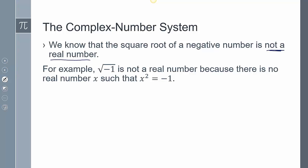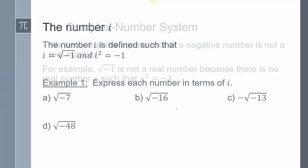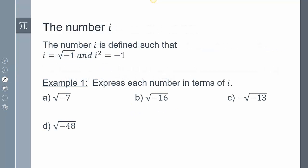An example of that would be the square root of negative 1. It's not a real number because there's no real number x that satisfies x squared equals negative 1. In fact, you can't square any number and get a negative value. That's where we get imaginary numbers. The number i is defined as the square root of negative 1, and we can also say that i squared is negative 1.